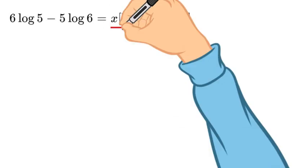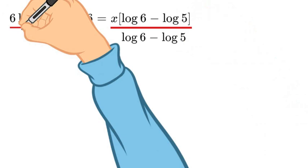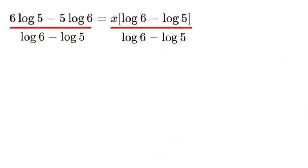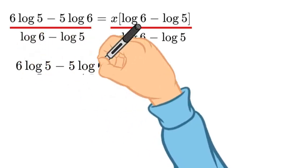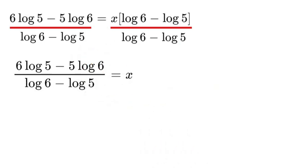Now that we've got a fresh page, we are going to divide out log 6 minus log 5 so that we will leave our x alone on one side. Once you've done that, it will look like this. We'll have 6 log 5 minus 5 log 6 over log 6 minus log 5. And that's what x is equal to.